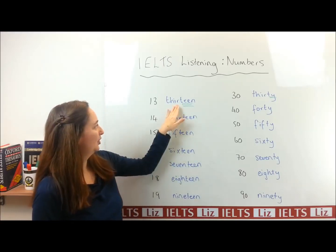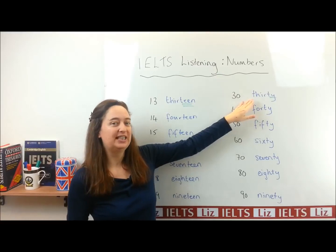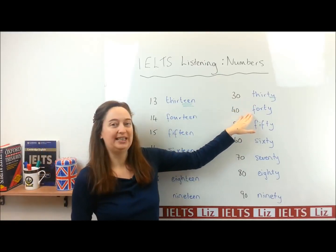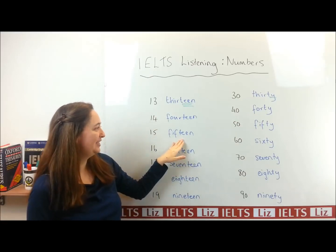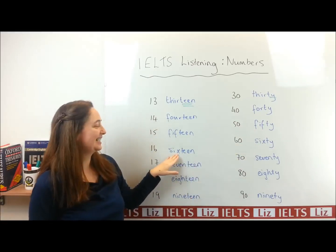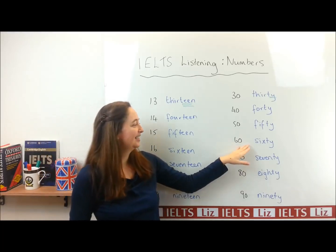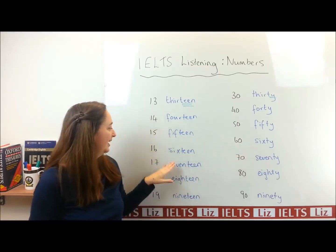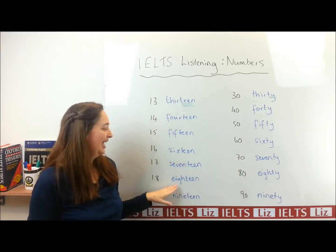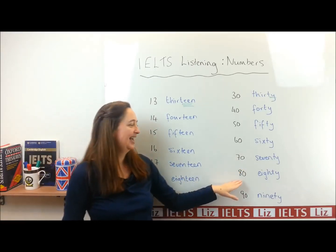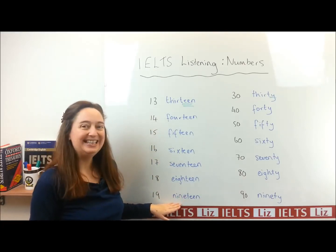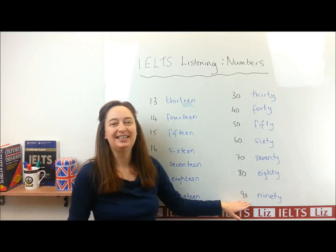So let's check pronunciation: thirteen, thirty; fourteen, forty; fifteen, fifty; sixteen, sixty; seventeen, seventy; eighteen, eighty; and the last one: nineteen, ninety.